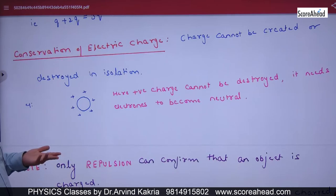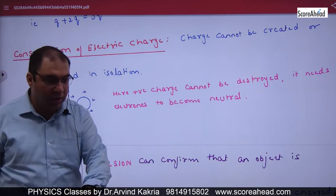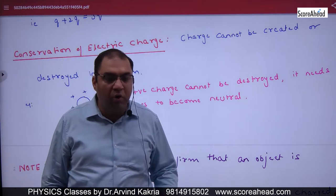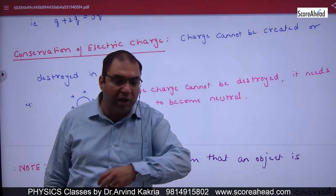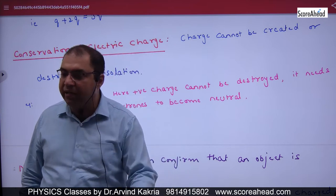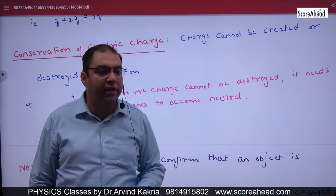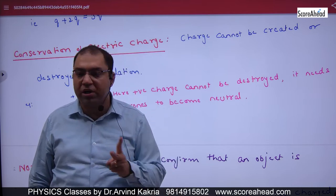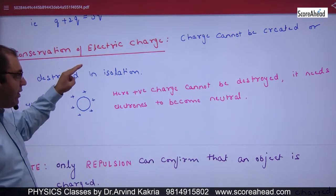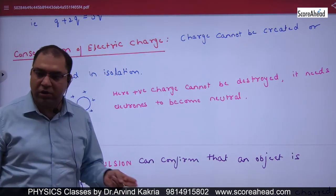Conservation of charge: charge cannot be created or destroyed in isolation. If charge is produced in one body, there will need to be another body from which it is removed. If someone has a deficiency, another body will complete it. There will need to be two bodies. Without isolation, you cannot stop or create charge.